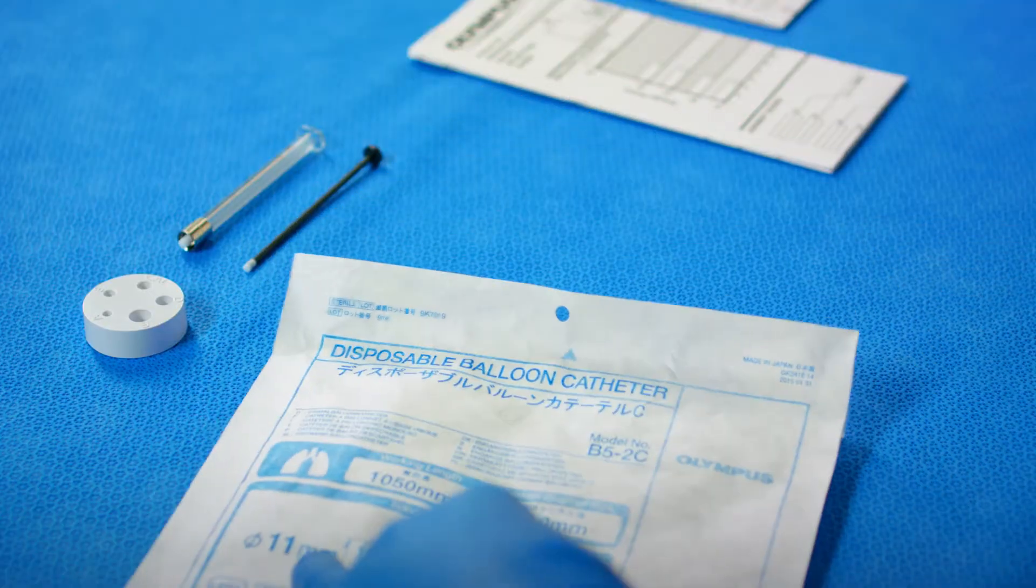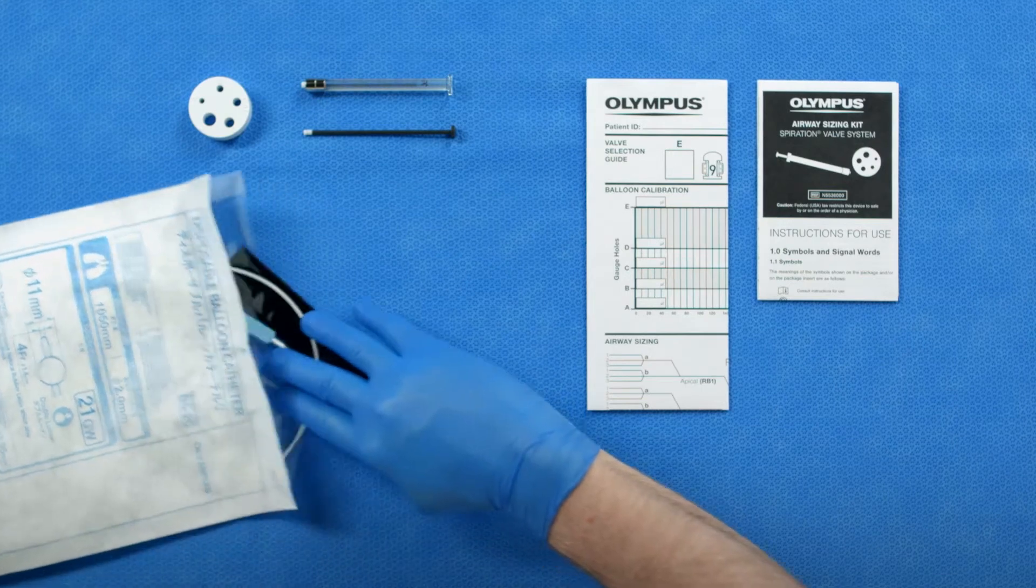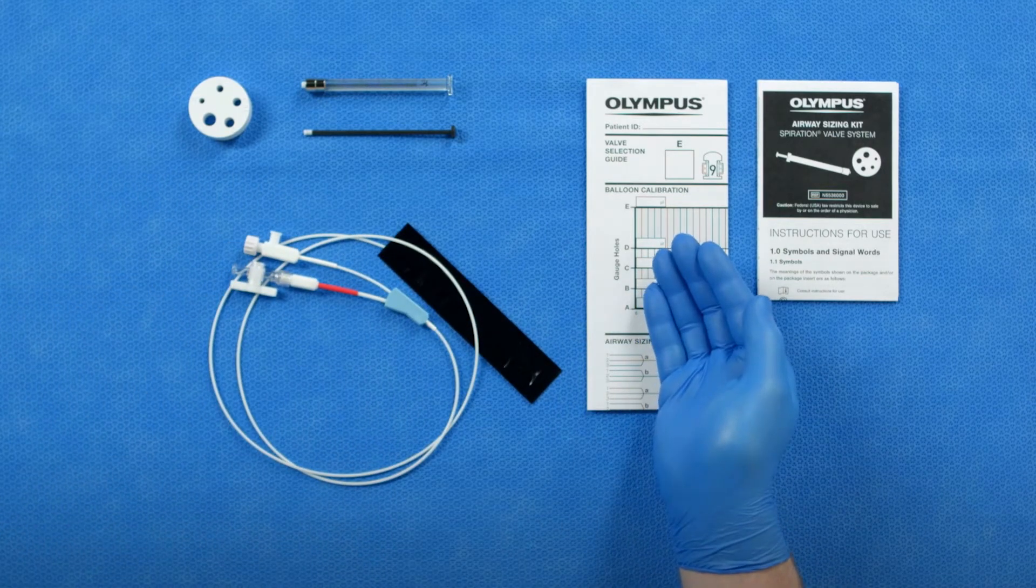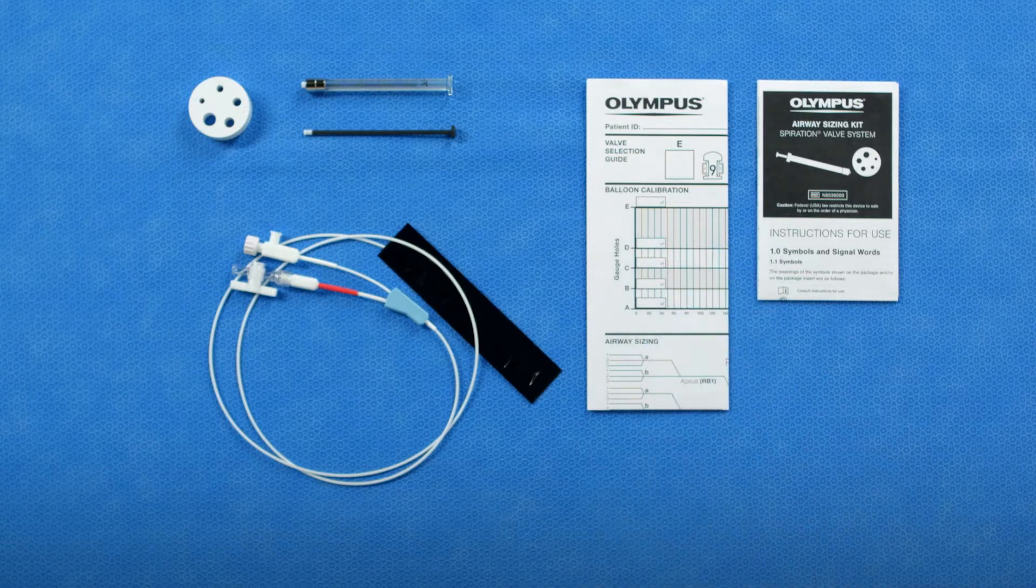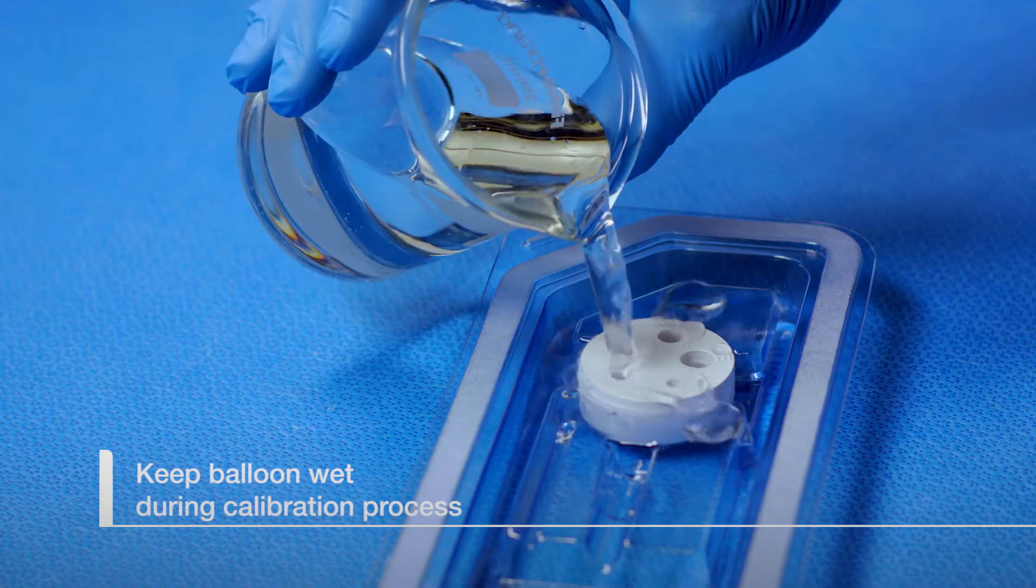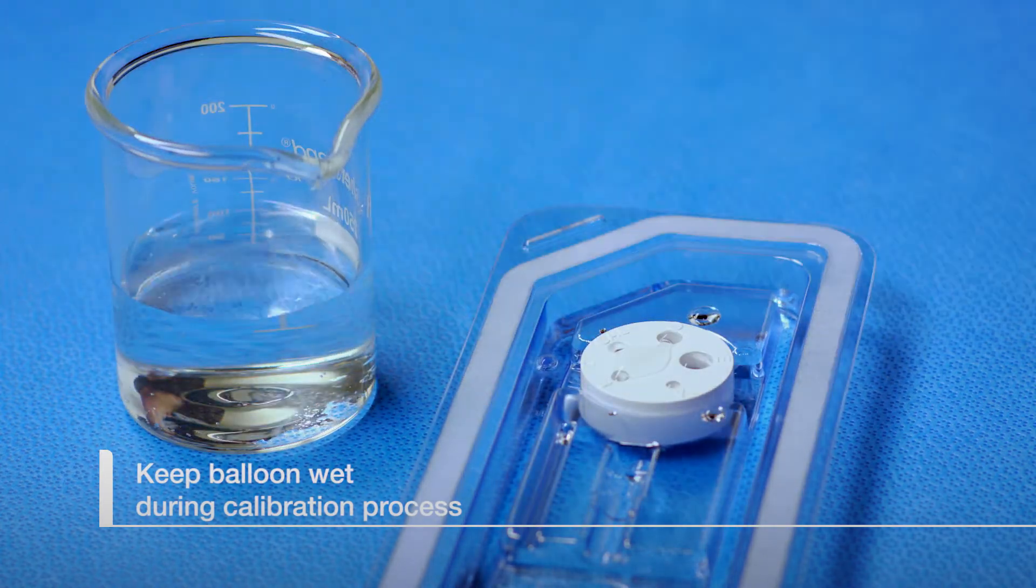Once the Olympus B5-2C balloon catheter has been prepared, it will need to be calibrated. A worksheet is included to record the calibration data used for airway sizing. First, wet the calibration gauge and balloon with sterile saline and continue to keep wet during the calibration process.